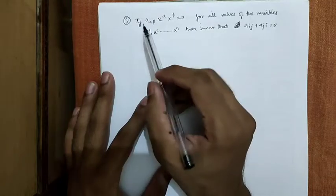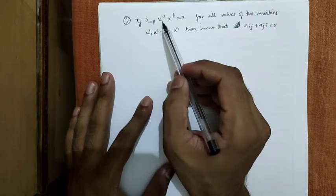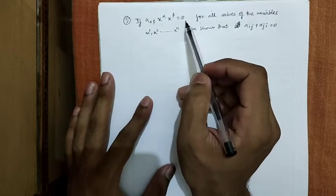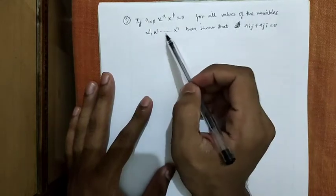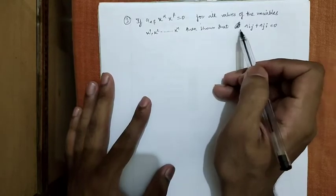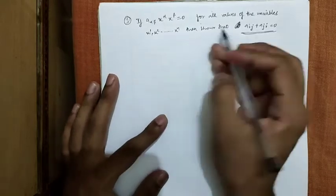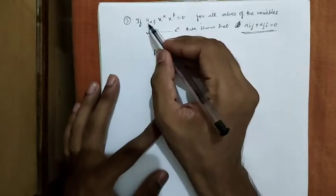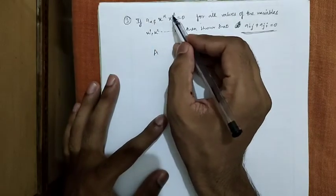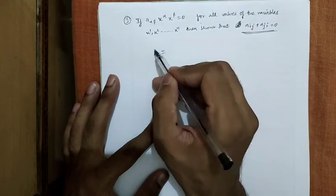Our next example is that if A_αβ x_α x_β equals 0 for all values of the variables x_1, x_2 up to x_n, then show that this relation exists. So let us suppose that this quantity A_αβ x_α x_β equals to big A.